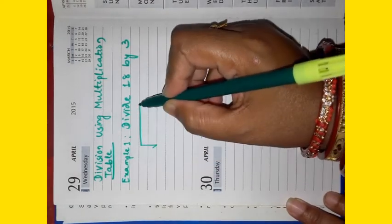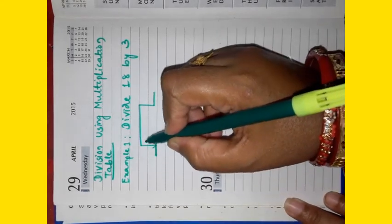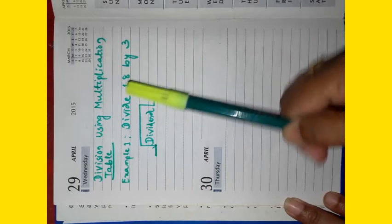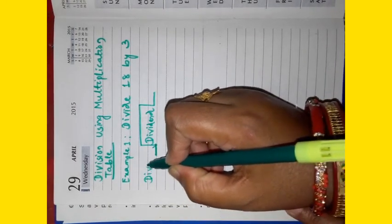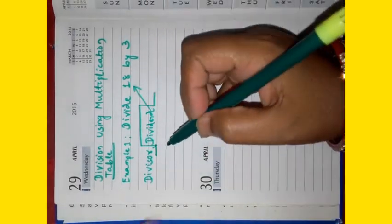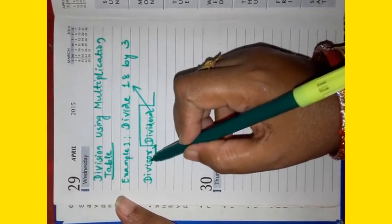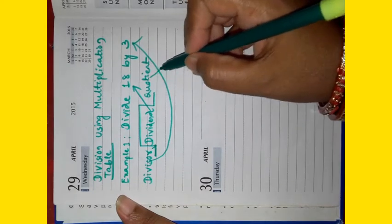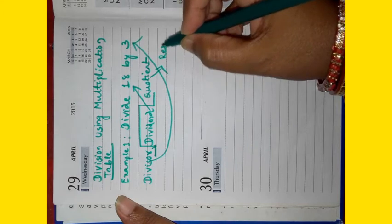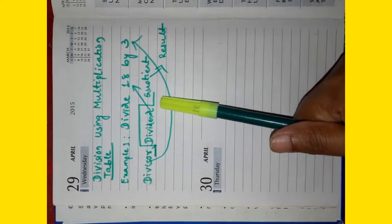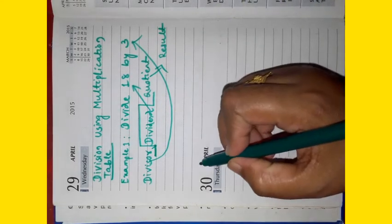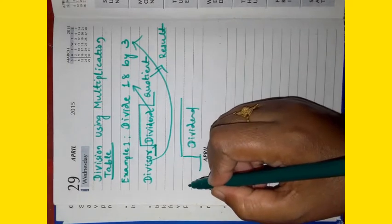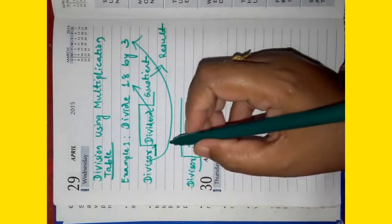First we have to arrange the numbers like this. Here we have to write the dividend, which means the number which we have to divide. Then here we have to write the divisor, which means the number by which we have to divide the dividend. And here we have to write the quotient. Quotient is the result. This can also be written in another form like this. Here dividend, here divisor, and here quotient.